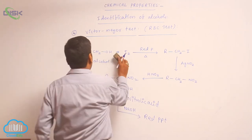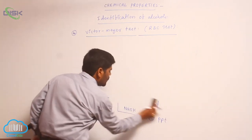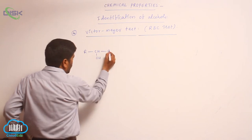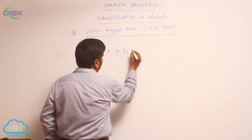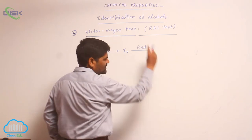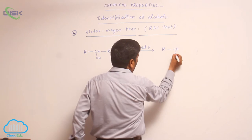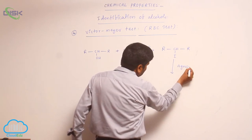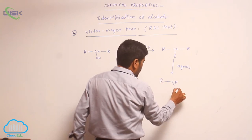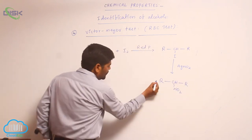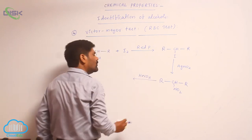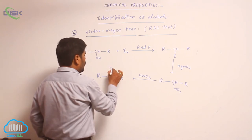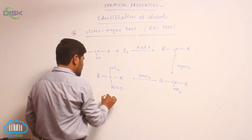For a second-degree alcohol (R·CHOH·R'), it reacts with iodine in the presence of red phosphorus to convert into a secondary alkyl iodide (R·CHI·R'). This reacts with silver nitrite to form a nitro compound (R·CH(NO₂)·R'). This nitro compound reacts with nitrous acid to form a pseudonitrole, which contains a C–N=O group.